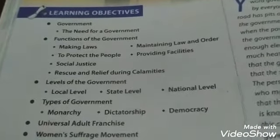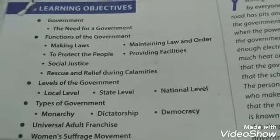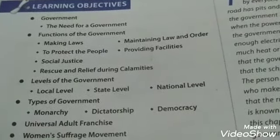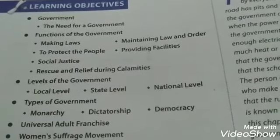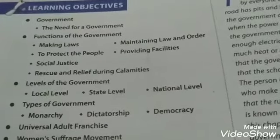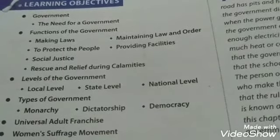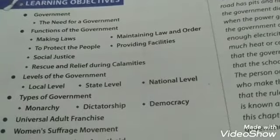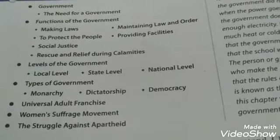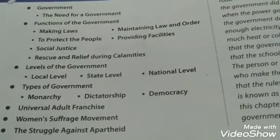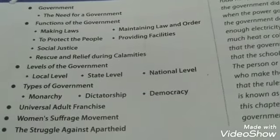Students, this is the third chapter of civics. The chapter name is 'Government.' In this chapter we discuss the definition of government, the need for government, functions of government — such as making laws, maintaining law and order, protecting people, providing facilities, social justice, rescue and relief during natural disasters — levels of government, types of government, democratic rights and democracy, and different democratic rights movements.